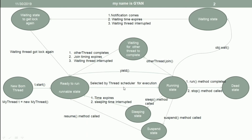The thread scheduler always picks a thread from the runnable state. The thread scheduler picks the thread from the runnable state and the thread goes to the running state, where the thread is executing on the CPU.